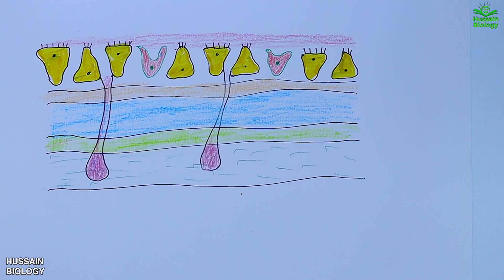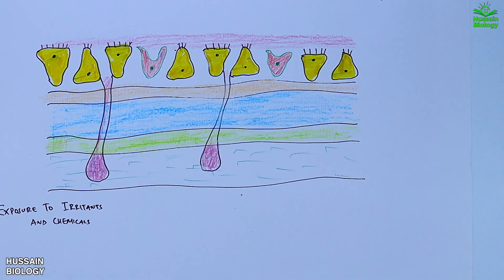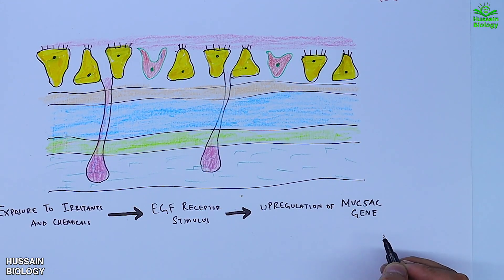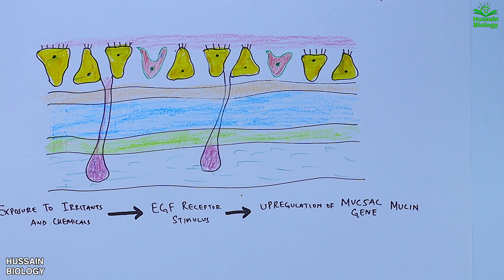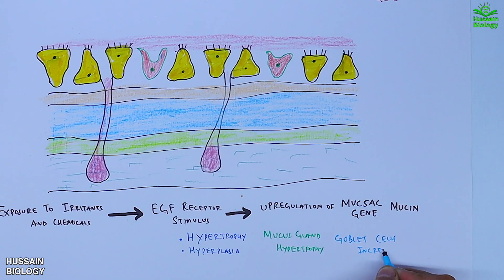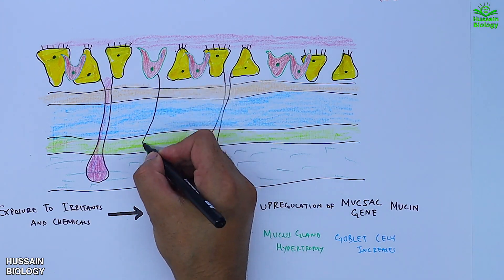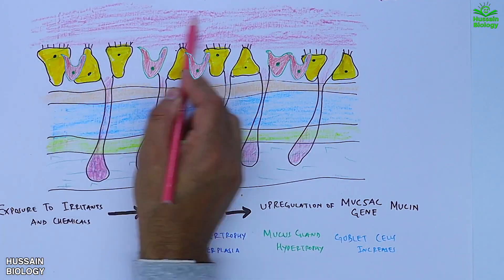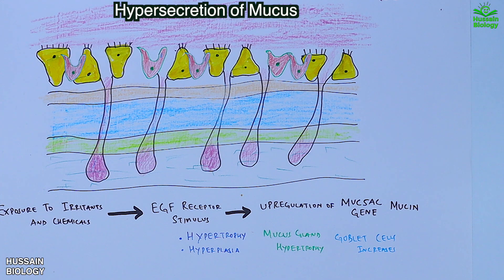When exposed to irritants and chemicals, the EGF receptor is stimulated, driving upregulation of the MUC5AC gene (mucin gene) in goblet cells. This gene expression leads to overproduction of mucin, a gel-like secretion. Additionally, hypertrophy and hyperplasia of cells, glands, and goblet cells occurs, increasing goblet cell numbers. The increased glands and goblet cells drive hypersecretion of mucus, leading to chronic bronchitis.